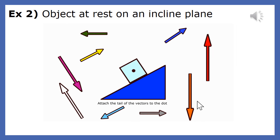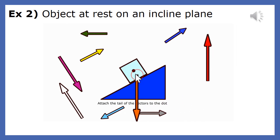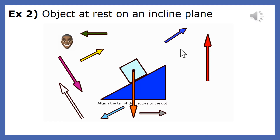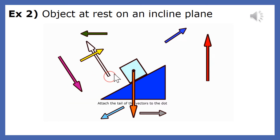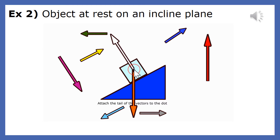Let's review this one more time. The weight force is the orange force since it points straight down. The white force is the normal force — the ramp's force on the box. The yellow force is the friction force, parallel to the ramp, and it's the force that keeps the box from sliding down the ramp.